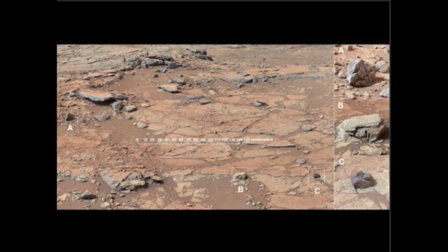The rock in the upper left, location A, shown in the top right enlargement, is a bread-crusted rock. That rock has an interior that has shrunken relative to the crust, or the outer part has expanded to form these fractures, and that's indicating something that caused that rock to go through that type of change.